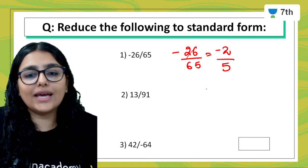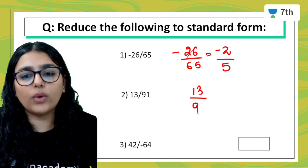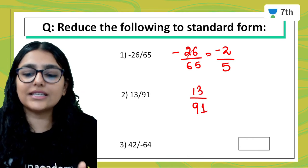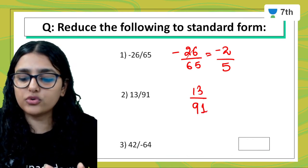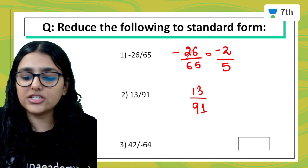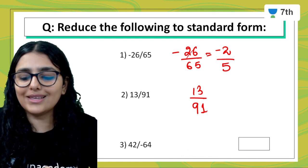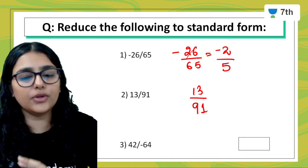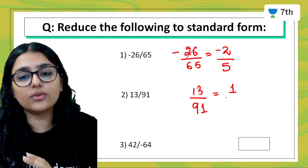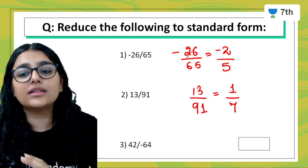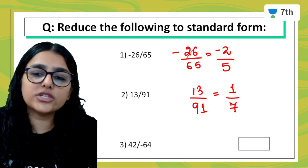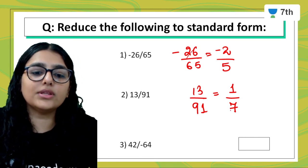Moving forward, we have 13 upon 91. I can see 13 is the same prime number, so I check if 91 is a multiple of 13. If you remember the table of 13: 13 times 7 is 91. So the lowest form is 1 upon 7.